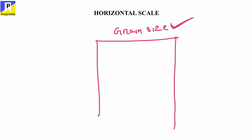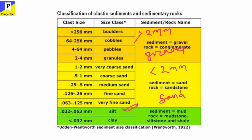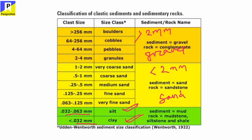This grain size uses the standard Wentworth sediment size classification. In the Wentworth sediment size classification, particles having a diameter greater than 2 mm are known as gravel. Particles having a diameter less than 2 mm are known as sand. The particle size of silt is 0.063 to 0.003 mm, and clay is less than 0.002 mm. Basically, on the horizontal axis, the Wentworth sediment size classification is used.